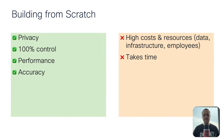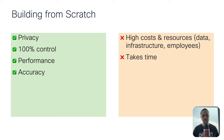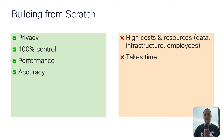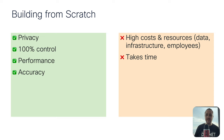So what do we say about building an LLM from scratch? You have control of your data, you have privacy, you have performance, and you have accuracy if you've done it right. But on the other hand, you have high costs and resource requirements. You need to be aware of that and it takes time — it takes time to build one of these models.